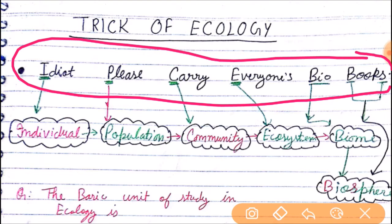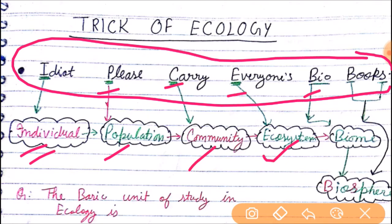Idiot please carry everyone's bio books — I for Individual, P for Population, C for Community, E for Ecosystem, Bio for Biome, and from Books you take B and S, which gives you Biosphere. So this is the trick for remembering the sequence.